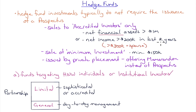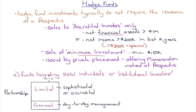Hedge funds cannot advertise, whereas a mutual fund can advertise. There may also be a minimum investment, issued by private placement offering memorandum instead of a prospectus. Hedge funds target high net worth individuals or institutional investors. They are typically set up as a partnership — all investors are limited partners and the general partner is the fund manager.